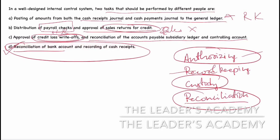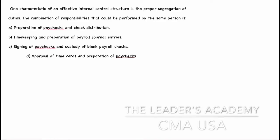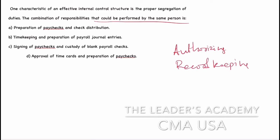Next question: one characteristic of an effective internal control structure is the proper segregation of duties. The combination of responsibilities that could be performed by the same person — meaning one person can do two jobs — which are those? Again, concentrate on the four points: authorizing, record keeping, custody of the assets, and reconciliation.